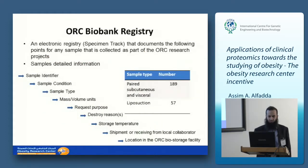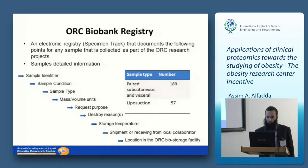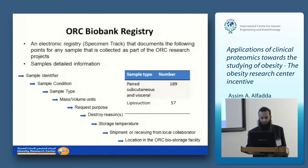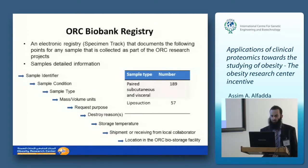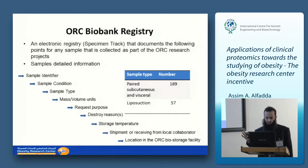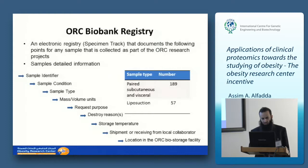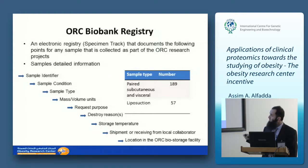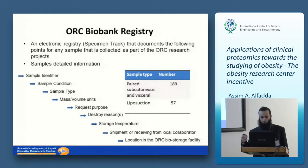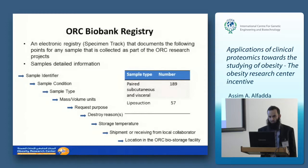We established a Biobank and registry for these samples. We currently have 189 paired subcutaneous and visceral samples, and 556 liposuction samples from different regions of the body. The Biobank clearly documents the sample type, volume, storage temperature, and all details, so whenever we want to conduct a study, we go back to the bank and try to answer the question at hand.